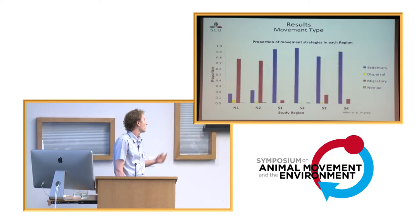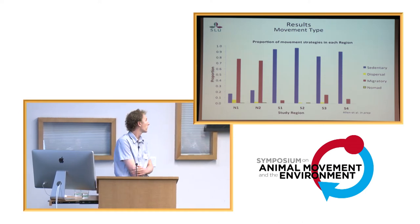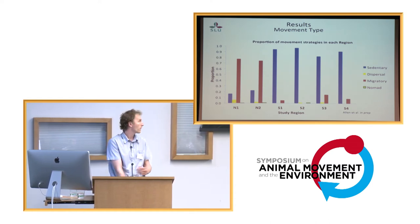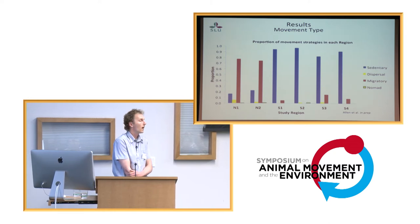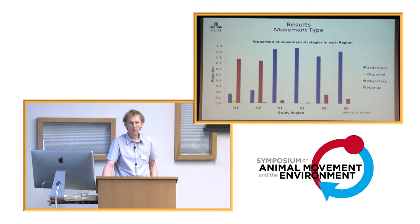Moving on to results, starting with movement type. There was definitely a divide between the north and the south of Sweden. In the north, over 70% of moose were migratory, whereas in all the southern regions (S1 to S4) they were all sedentary. Dispersal and nomadic movements didn't really feature in our study areas.